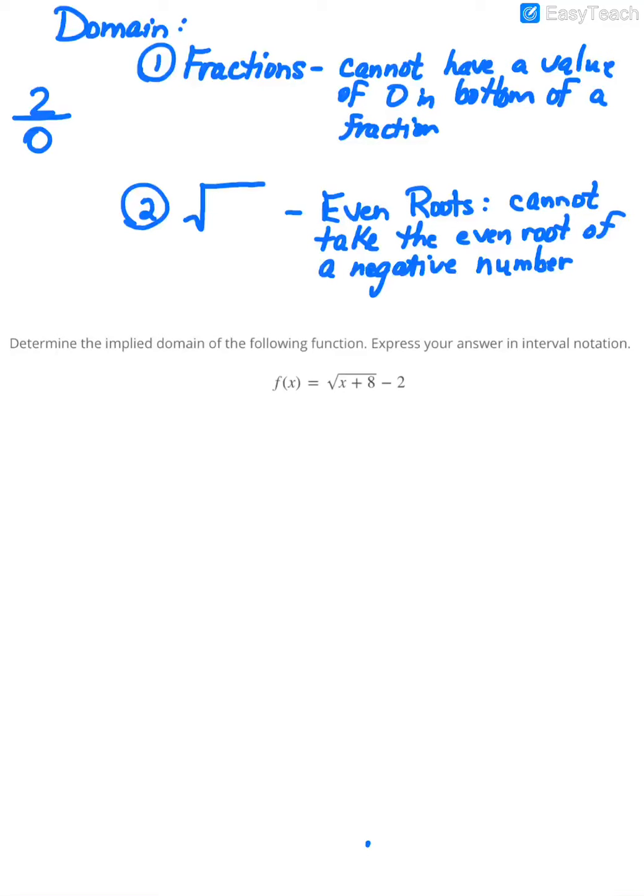Let's look at this first example. If they're asking you to determine the implied domain, you're looking for fractions or square roots. What I notice right off the bat is this particular problem has a square root in it. So I know that is going to create an issue for the domain.